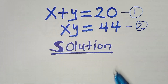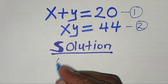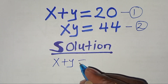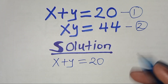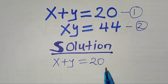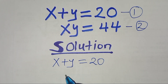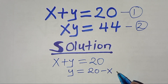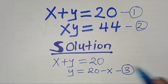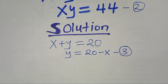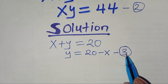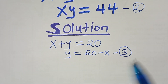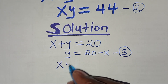We can write Equation 1 as x plus y equals 20. Now let's make y the subject of the formula, so we have y equals 20 minus x. Let's call this Equation 3.